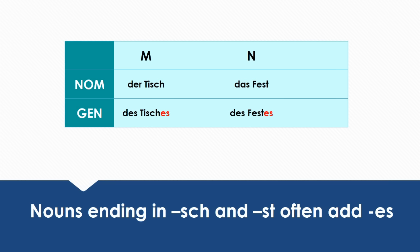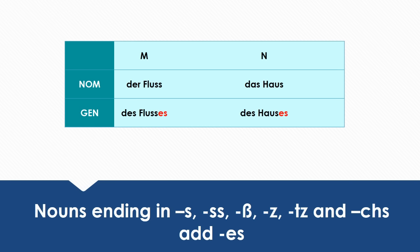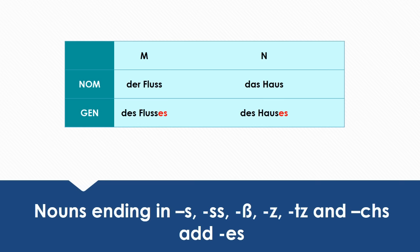Nouns ending in SCH and ST often add ES. For example: 'der Tisch' becomes 'des Tisches,' 'das Fest' becomes 'des Festes.' Similarly, nouns ending in SS or S also take ES: 'der Fluss' becomes 'des Flusses,' 'das Haus' becomes 'des Hauses,' and 'der Witz' becomes 'des Witzes.'